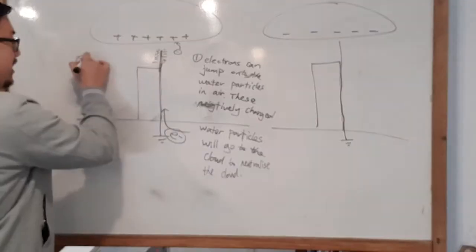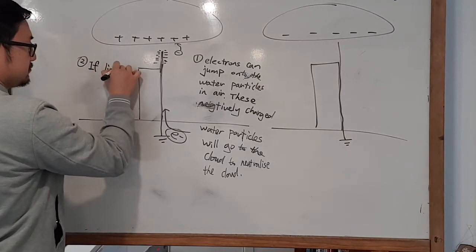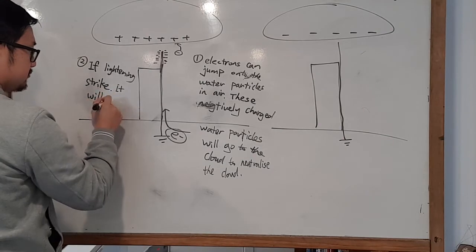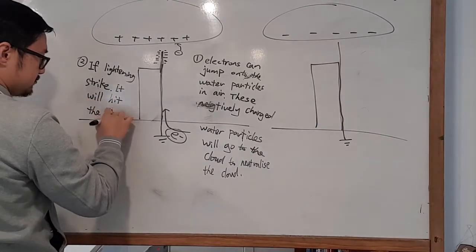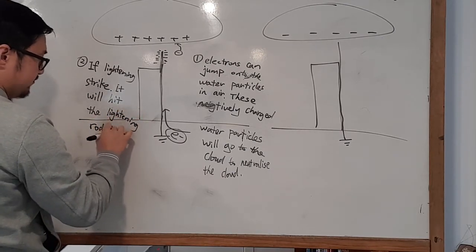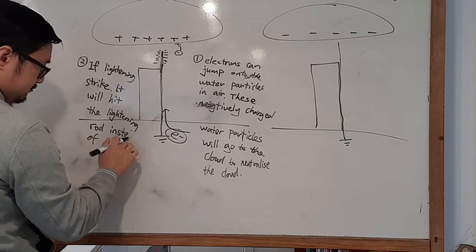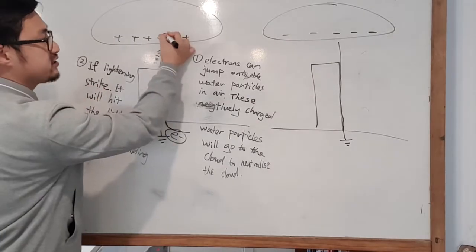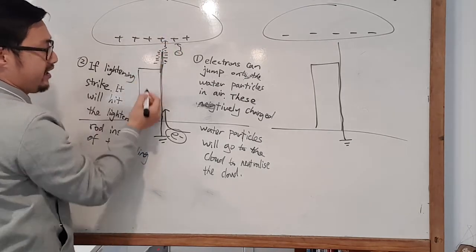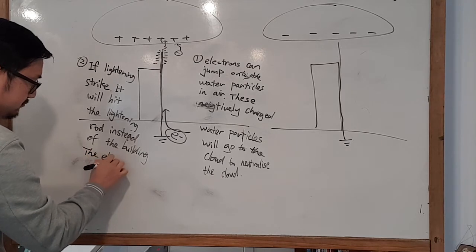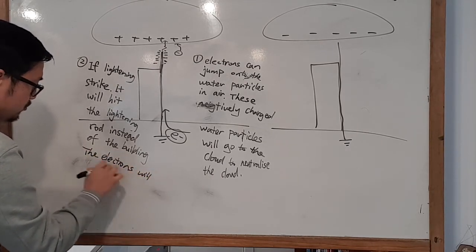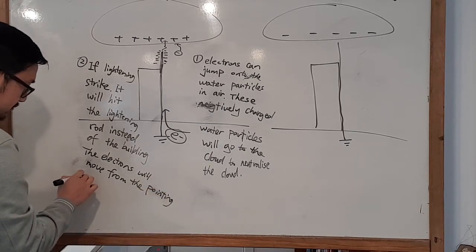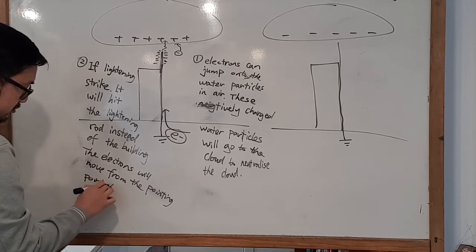The second function is: if there is a lightning strike, it will hit the lightning rod instead of the building. In this case it's not the positive charge jumping — rather, electrons move from the rod tip up to the cloud. The pointy tip concentrates charge and provides the path for electrons to travel to the cloud.